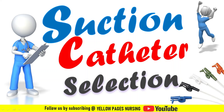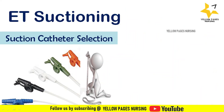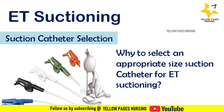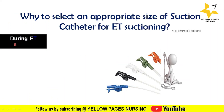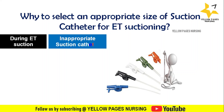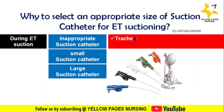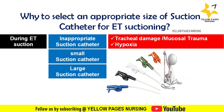Why select an appropriate size suction catheter for endotracheal suctioning? During endotracheal suctioning, if we use an inappropriate suction catheter — for example, a small or large suction catheter — it may cause tracheal damage, mucosal trauma, and hypoxia.